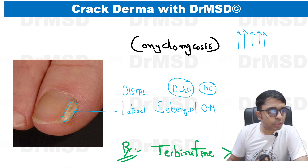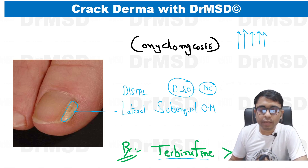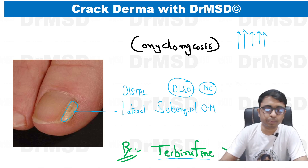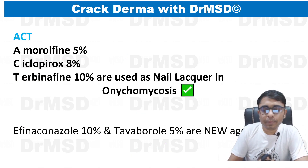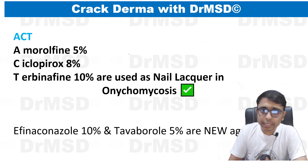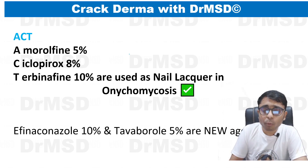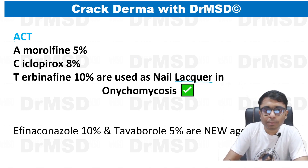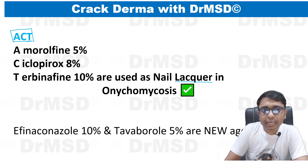Treatment for onychomycosis uses both oral and topical combinations. Orally, we prefer to use terbinafine over itraconazole. For topical preparation, we cannot use creams or ointments because the nail is very hard and will not allow active ingredients to penetrate through its surface. So we use nail lacquers. You can remember the nail lacquers with a simple mnemonic: A, C, T — where A stands for amorolfine, C stands for ciclopirox, and T stands for terbinafine.